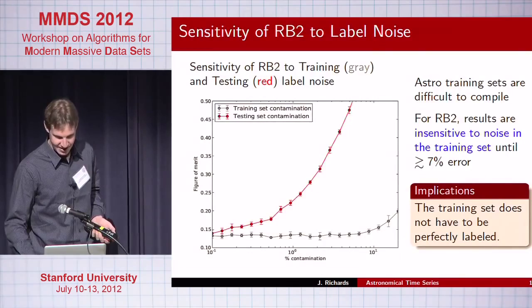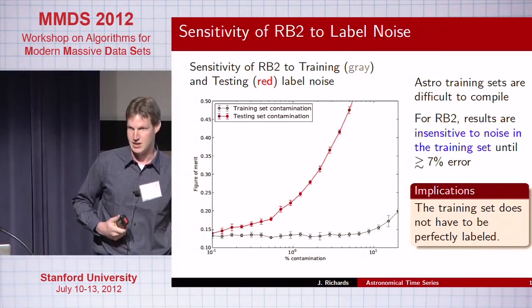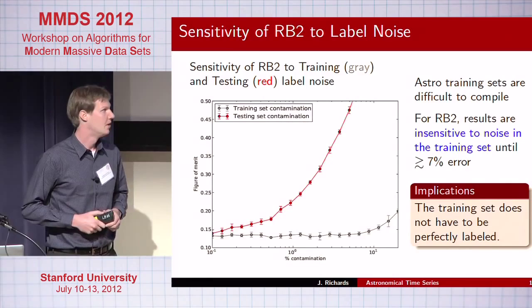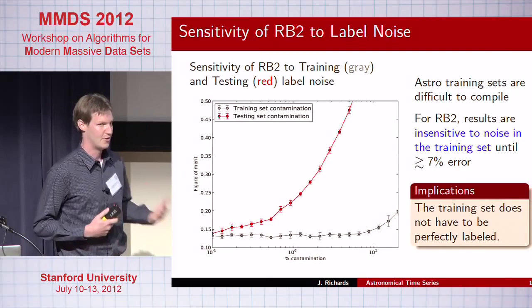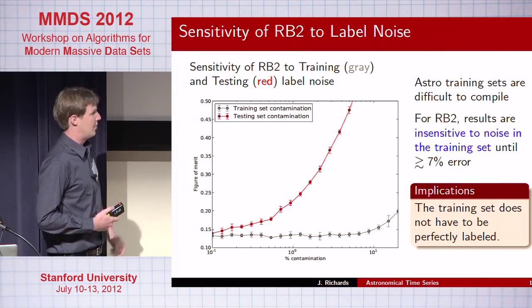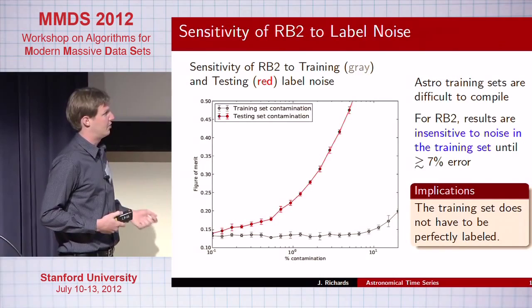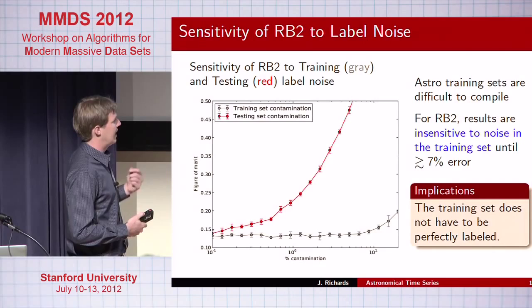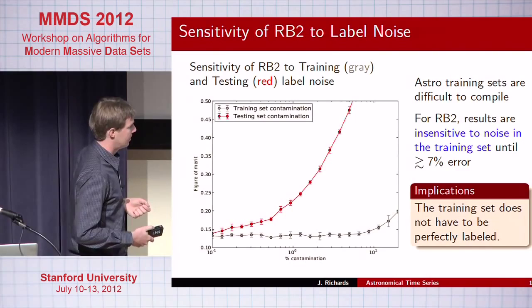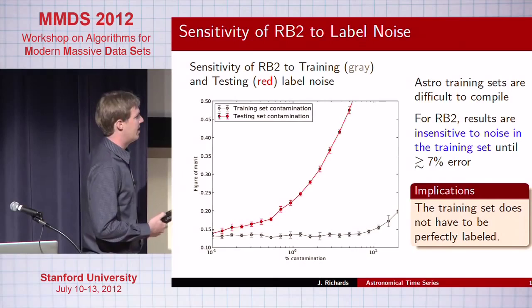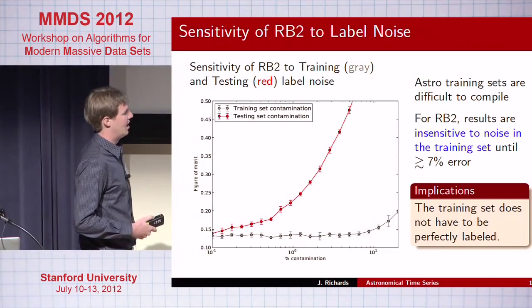One difficulty in doing these types of studies is getting clean training data. Spectroscopic follow-up resources are really expensive, so you can't follow up everything that might be real — getting an unbiased and clean training sample is extremely difficult. One result of the real-bogus classification is that we found that, at least with random forest, we're relatively insensitive to labeling errors in the training set up to about a 6–7% level. Since we expect contamination to be sub-1%, this implies the classifier does a good job at ignoring these errors.